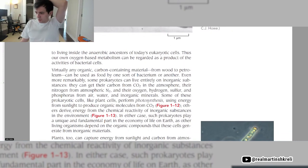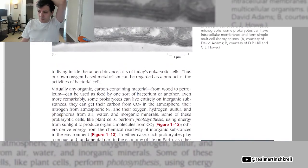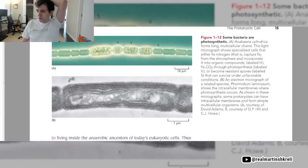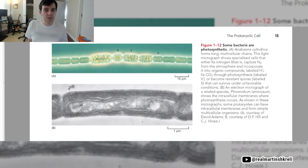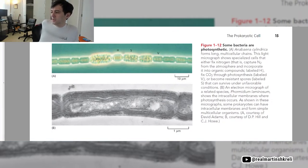Just this idea that our mitochondrion probably came from bacteria. And if you look at the way mitochondria are structured, they kind of look like their own little cells within our cells, and they even have their own DNA, which is really crazy. Let's look at figure 1.12. Some bacteria are photosynthetic. Anabaena cylindrica forms long multicellular chains. This light micrograph shows specialized cells that either fix nitrogen, that is they capture nitrogen from the atmosphere and incorporate it into organic compounds labeled H, or they fix CO2 from photosynthesis labeled V, or they become resistant spores labeled S that can survive under unfavorable conditions. Panel B is an electron micrograph of a related species called Phormidium laminosum, which shows the intracellular membranes where photosynthesis occurs. As shown in these micrographs, some prokaryotes can have intracellular membranes and form simple multicellular organisms.